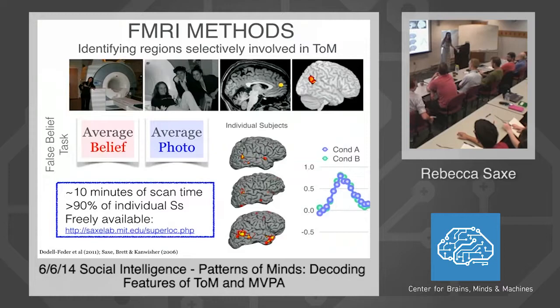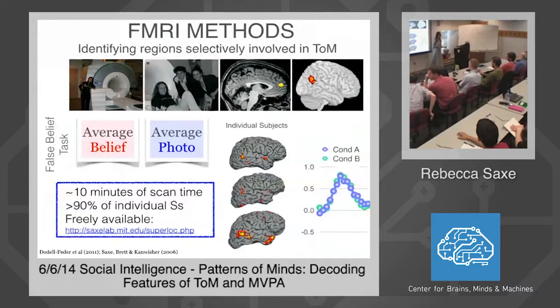Question: does the localizer have a condition about people but not about belief? The localizer does not, but I'm about to show you data showing that this is about belief and not about people — that was the first thing we wondered.